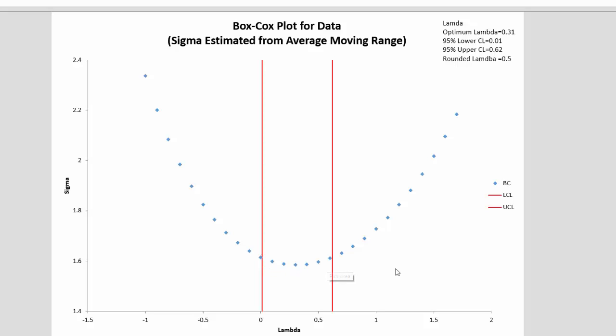And that says it's possible then that our transformation is the square root of x. And you have the option of either using the optimum lambda or the rounded lambda in the calculations. The default is the rounded lambda.